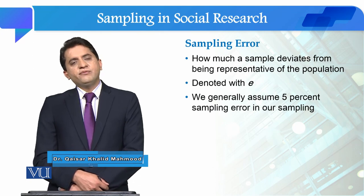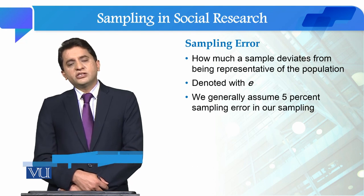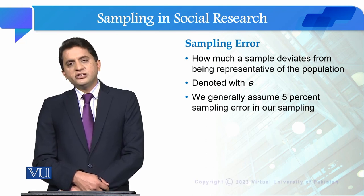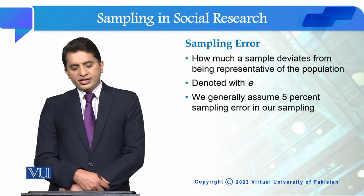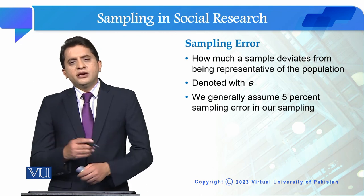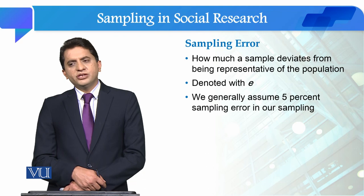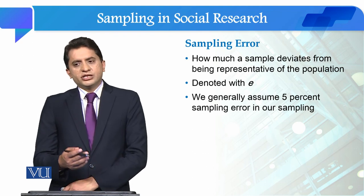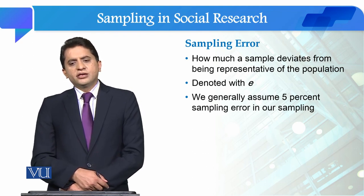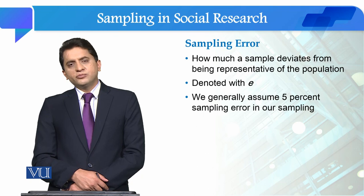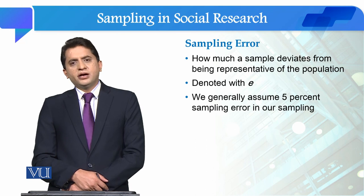Sampling error: when we do sampling, there is the possibility of sampling error. Sampling error is how much a sample deviates from being representative of the population. It is denoted with E, and we generally assume 5% sampling error — meaning if we collected data from 100 people, we assume 95% of our data is correct and 5% may contain error, such as selecting the wrong people or applying incorrect probability. These were the key concepts related to sampling that were necessary to know before studying sampling techniques.